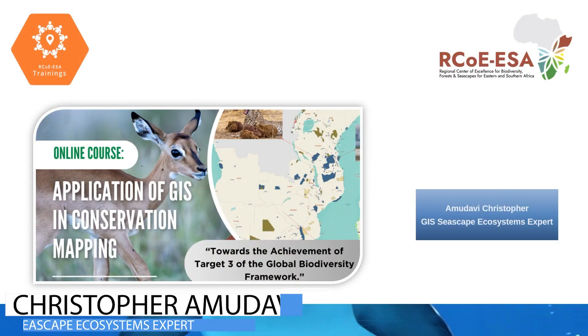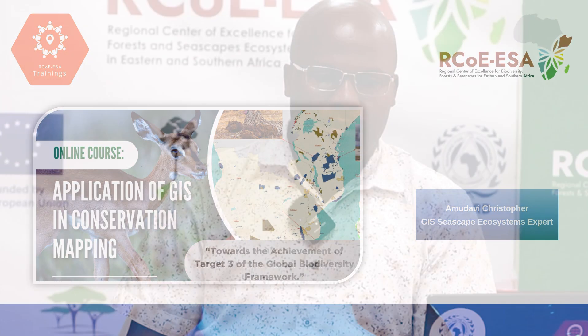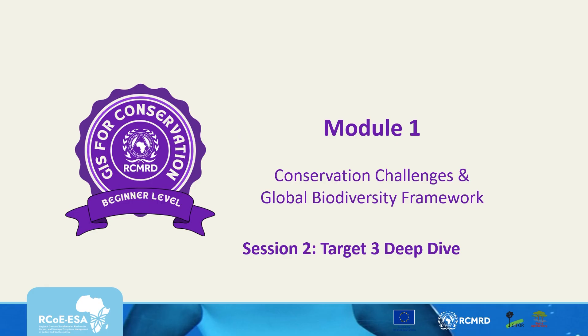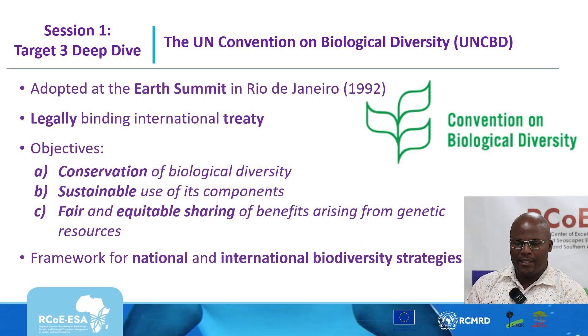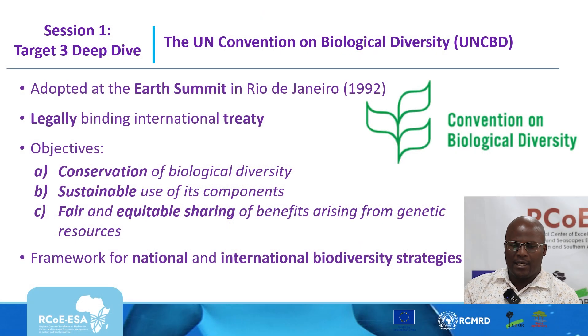Welcome to this online course on application of GIS in conservation mapping. This is the first part of session 2 of module 1. We will be looking at target 3. To give a brief overview of how target 3 came into place: target 3 is one of the KMGBF targets, which have been covered in the first session.